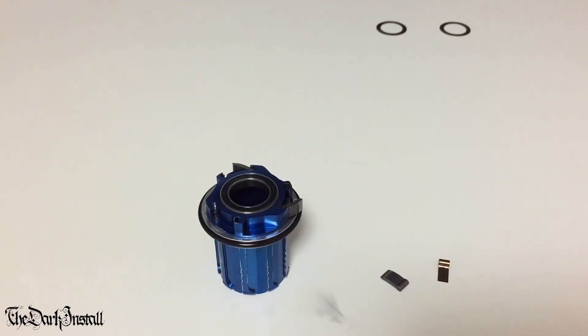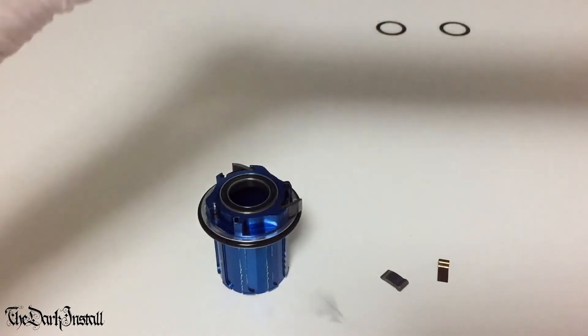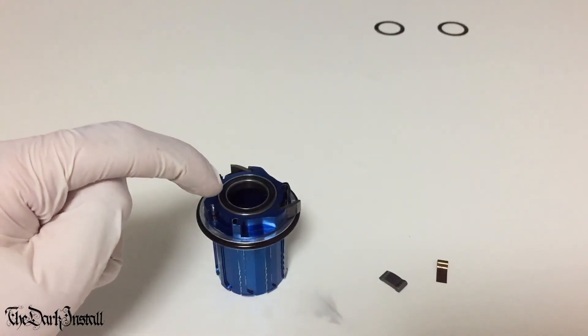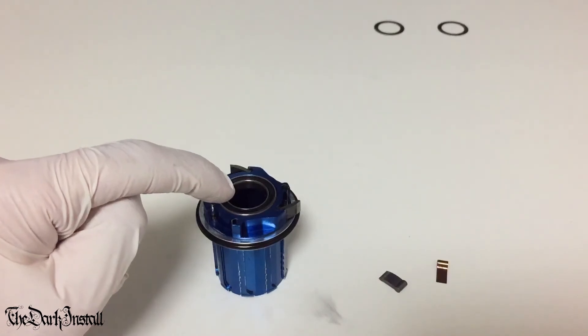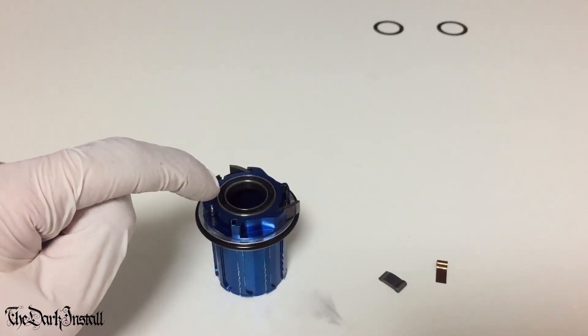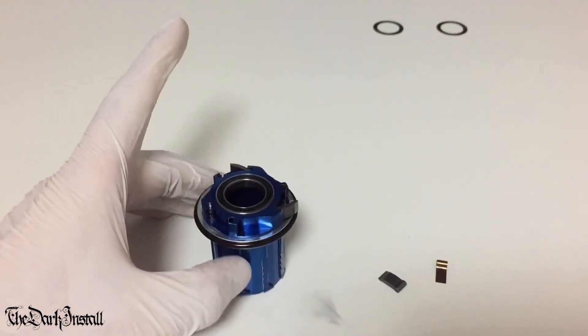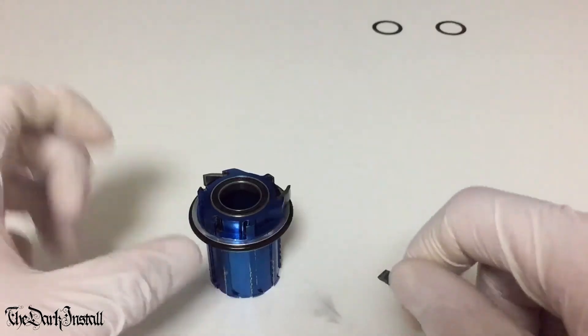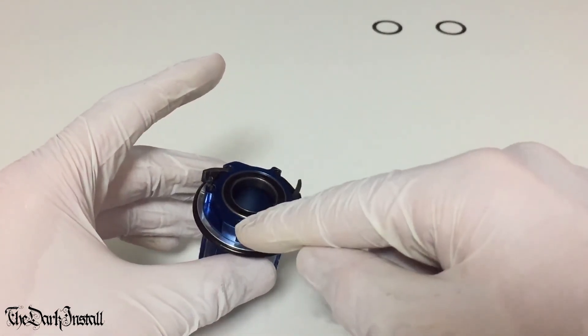So spray some of your degreaser like this stuff on a cloth. Don't spray it directly on it, spray it on a cloth and wipe all the parts down. Try to keep degreaser away from this rubber seal here, because this rubber seal even though it's got a seal isn't 100% sealing. Clean all in here. What you can do is you can get some cotton buds, spray the end of the cotton bud and start poking around in here to get it all clean.